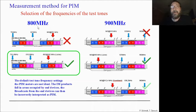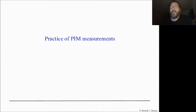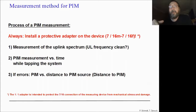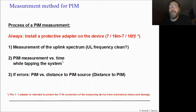In practice: first, install a protective adapter on the device — a 7/16 male/female to protect the device connector from damage, since replacement is very expensive. Then make a measurement of the uplink spectrum — check the gap and the frequency setting of the test tones. Then make a PIM measurement over time. When measuring over time, it's useful to tap on the system — move the components, cables, and connectors — to see if the measurement result is varying or not.